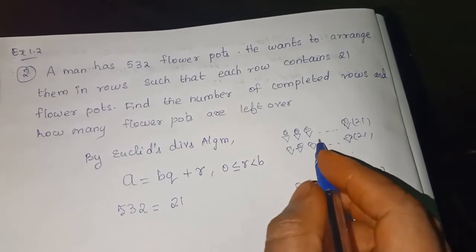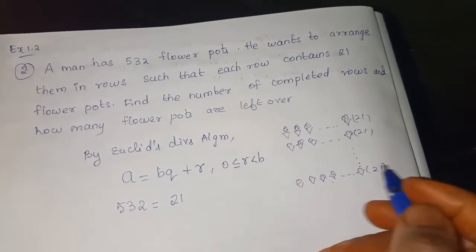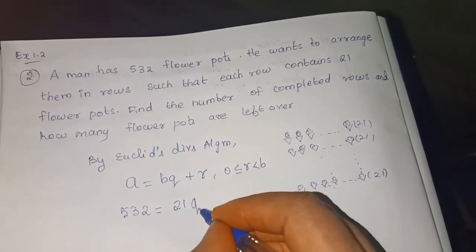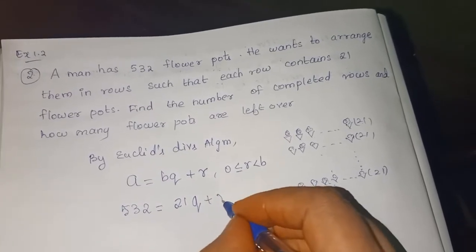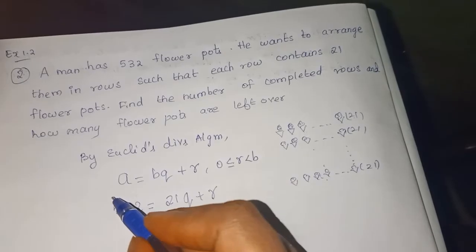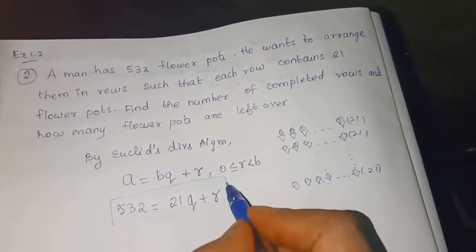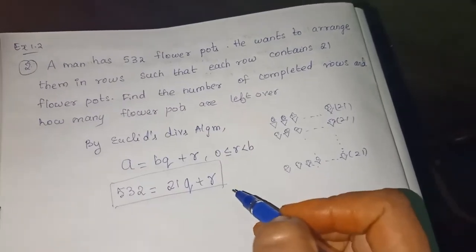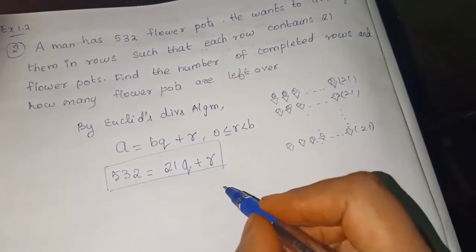Quotient. How many rows you are going to get? You don't know. You are going to divide and check. Quotient 21Q plus remainder also you should find out. This is according to Euclid's division algorithm. We framed a statement. Now you can divide it and check.